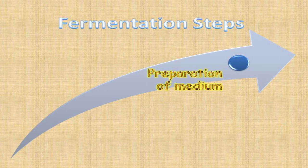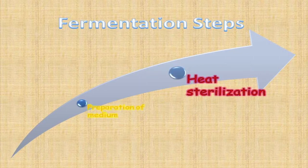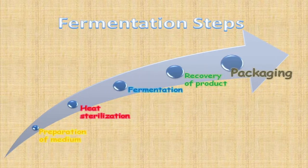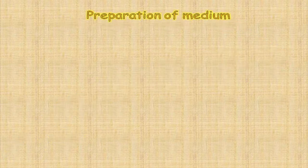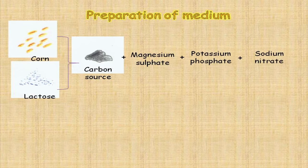Fermentation can be simplified into five steps: preparation of media, heat sterilization, fermentation, recovery and packaging. In preparation of media, carbon sources such as corn and lactose are used, in addition with magnesium sulfate, potassium phosphate and sodium nitrate, to provide adequate nutrients for fungal penicillin growth.